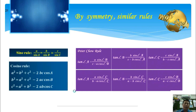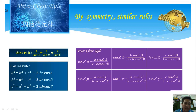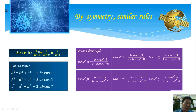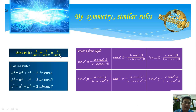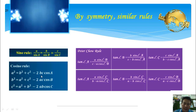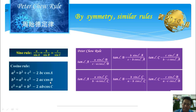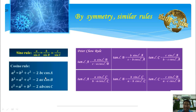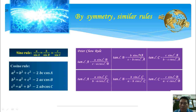We know that through symmetry, we can get similar sine and cosine rules. By symmetry, we can get a similar sine rule — A over sine A equals B over sine B, or B over sine B equals C over sine C — and similar cosine rules: A² equals B² plus C² minus 2bc cosine A; by symmetry, B² equals A² plus C² minus 2ac cosine B. The same is true for Peter Chiu Rule — through symmetry, we can get 6 versions of the Peter Chiu Rule.